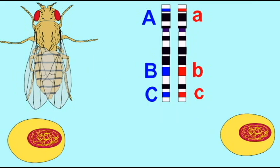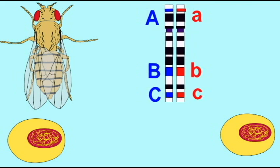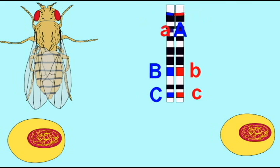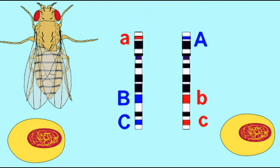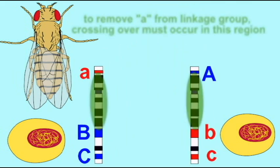For example here, if the A gene were to be separated from the B and C genes, that could only occur if the crossover event which separates the genes occurs in this indicated region here in green.